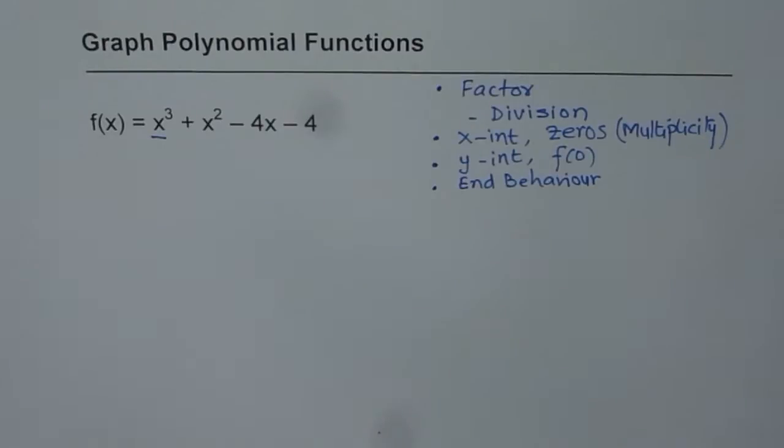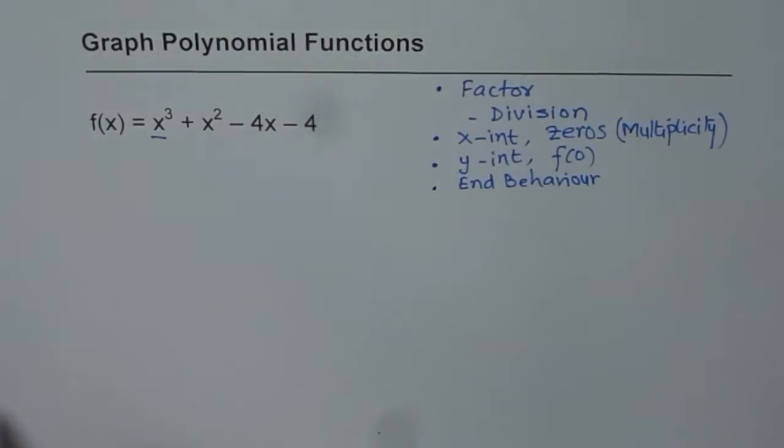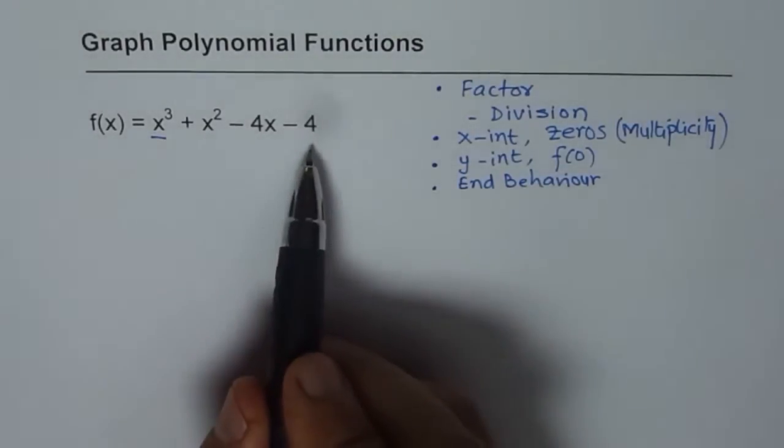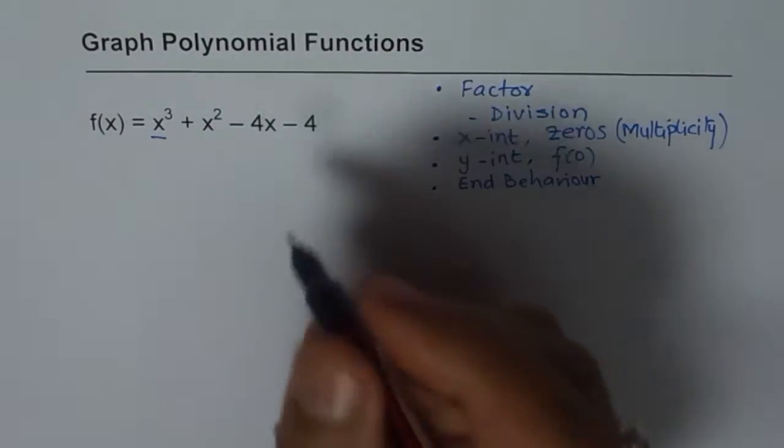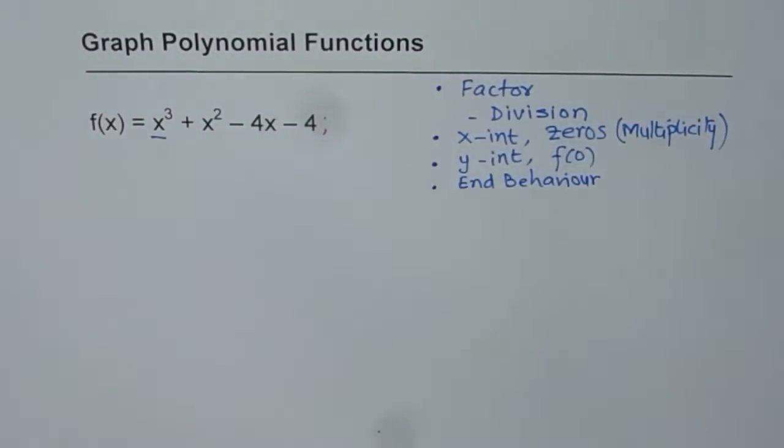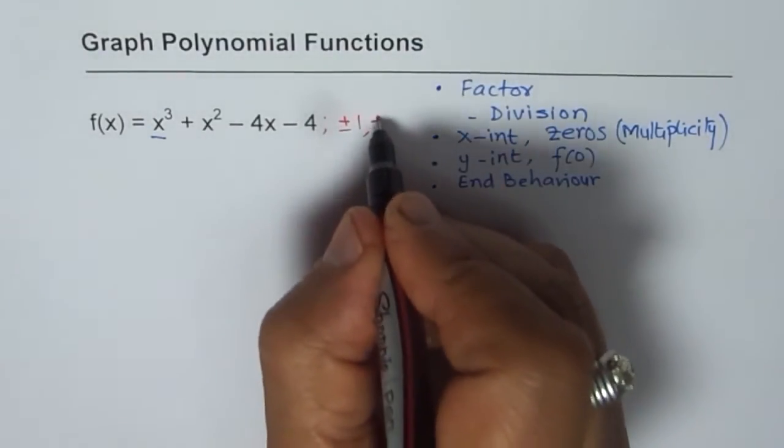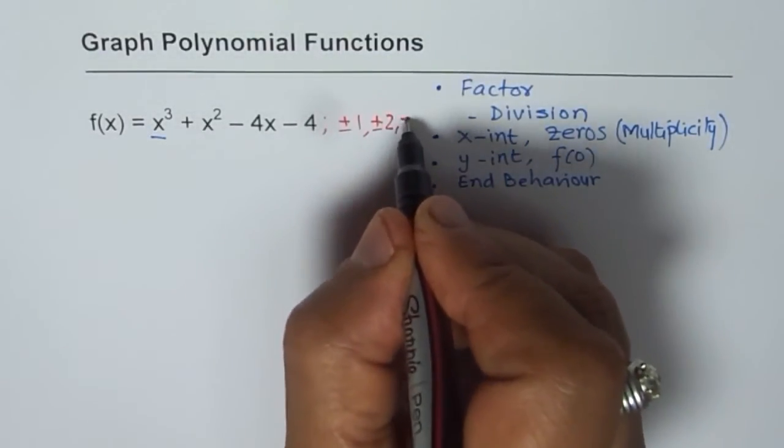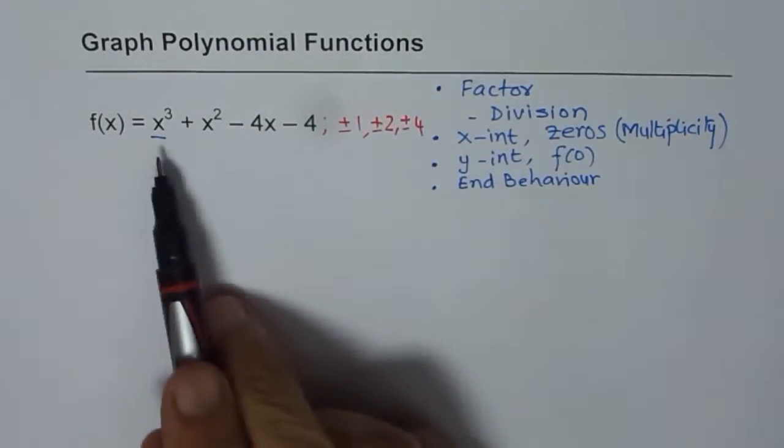So let us start with factoring first. Since that is time consuming and we really do not know what the factors could be. To find factors of any polynomial we are looking for factors of the constant term minus 4. Factors of minus 4 are plus minus 1, plus minus 2, and plus minus 4. So these are 8 values to try.